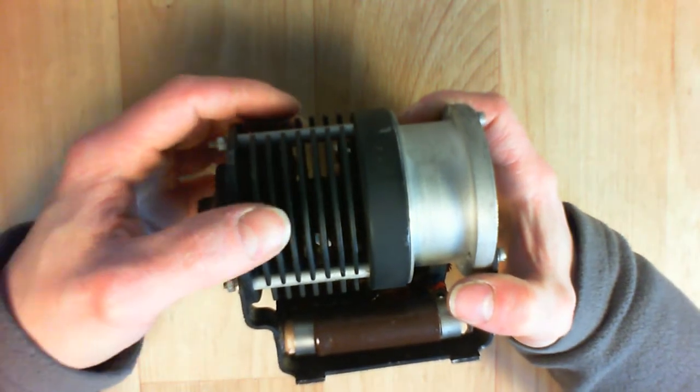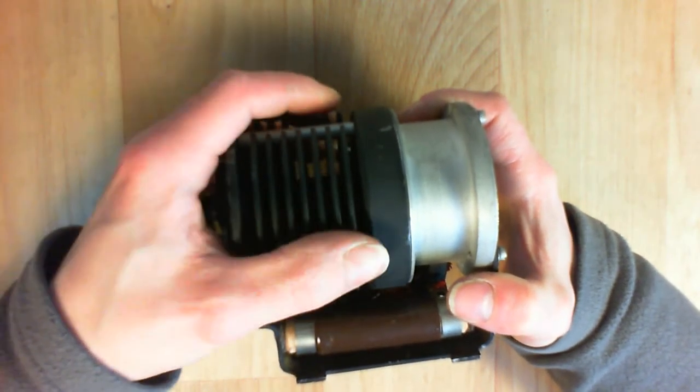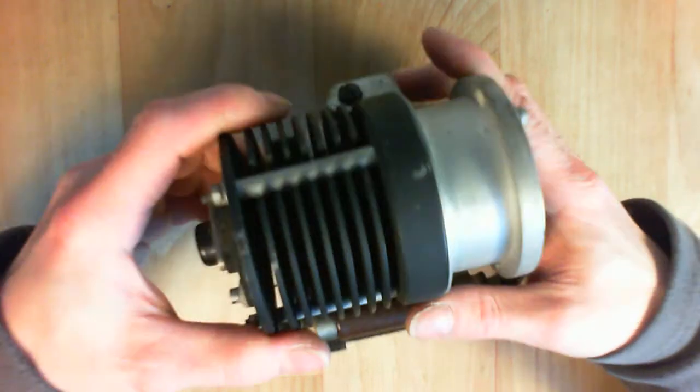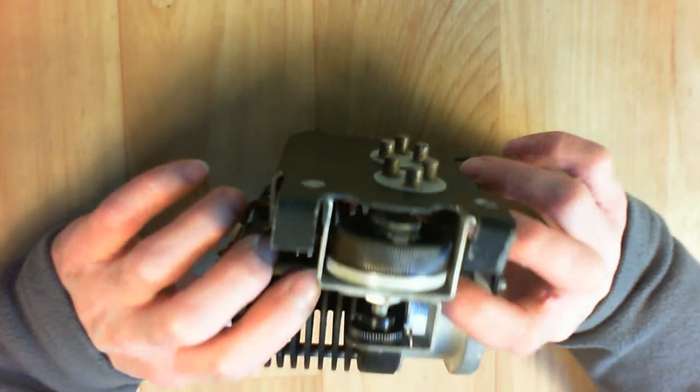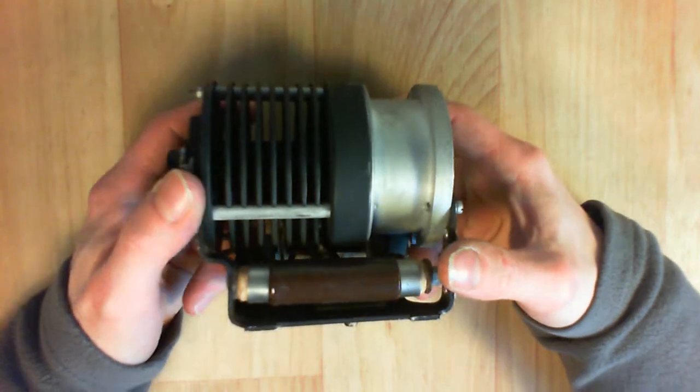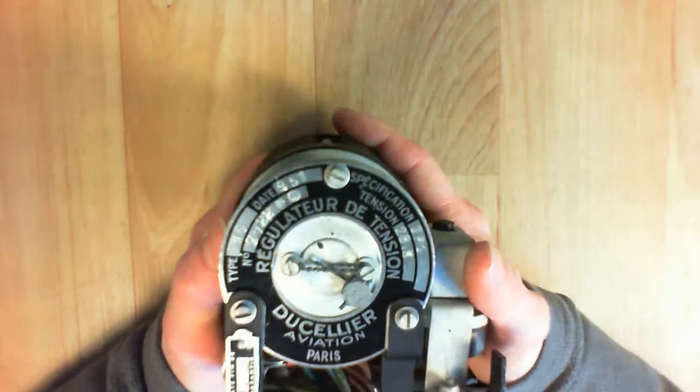This is a metal aluminum heat sink. So here is my carbon disc voltage regulator from 1951.